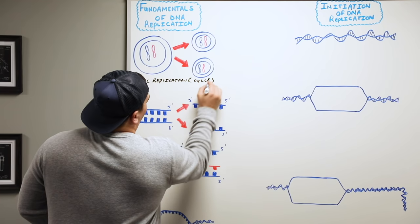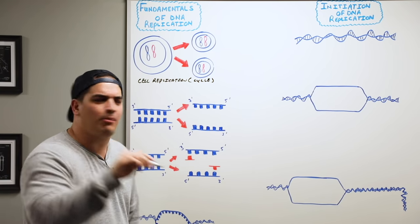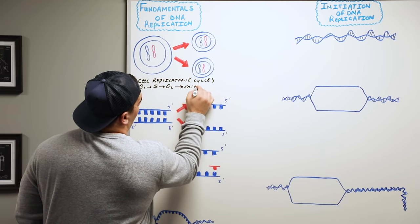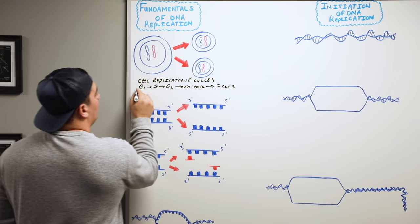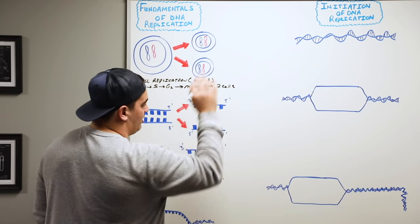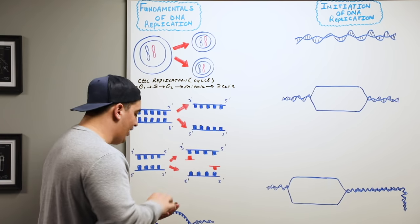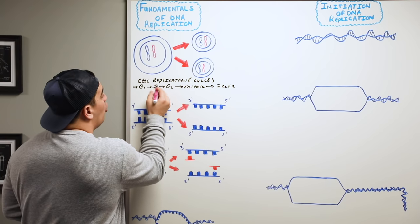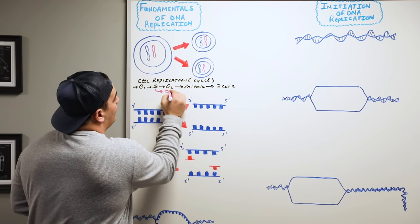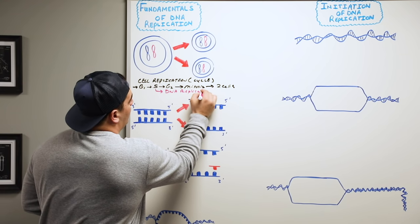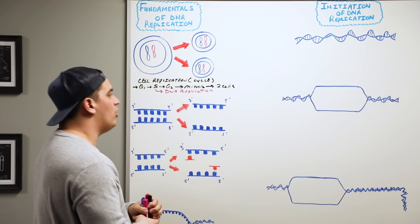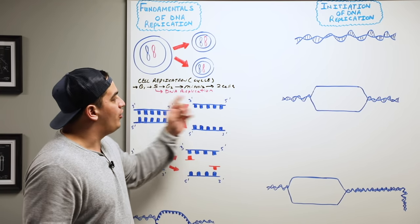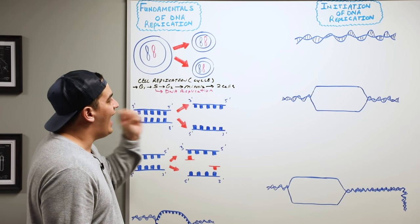In the cell cycle, you start off in G1, then go to S phase, then G2 phase, and then into mitosis, which gives you two cells. One cell enters G1, S, G2, goes through mitosis, and makes two cells. DNA replication primarily occurs within the S phase of the cell cycle. So the first fundamental you need to know: why do we perform DNA replication? In order for our cells to replicate and make more cells. The particular point when DNA is actually replicating is in the S phase of the cell cycle.